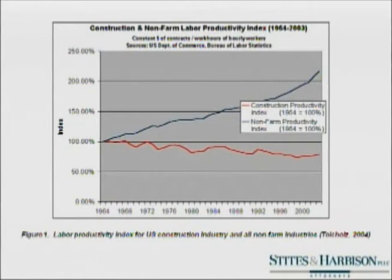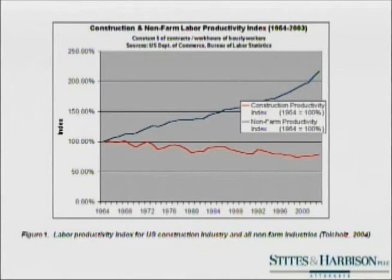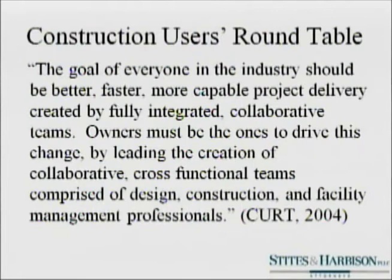I know some of you might be thinking: this is all fine, but we don't drive the train — the construction owner drives the train, not us. Let me give you some ammunition to use with the construction owners you deal with on a daily basis. The first chart, showing the striking gap between construction labor efficiency and the rest of the domestic economy, was completed in 2004. This data was not lost on sophisticated construction owners. At least as early as 2004, an organization known as the Construction Users Roundtable, or CURT, released the following statement: the goal of everyone in the industry should be better, faster, more capable project delivery created by fully integrated collaborative teams. Owners must be the ones to drive this change by leading the creation of collaborative, cross-functional teams comprised of design, construction, and facility management professionals.